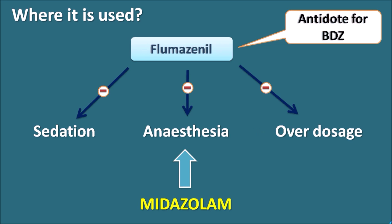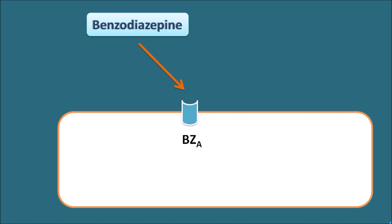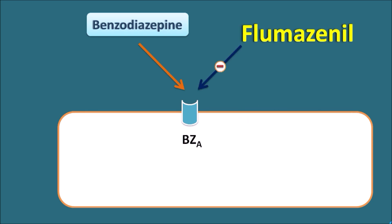Flumazenil can also be given for benzodiazepine overdoses. Whenever benzodiazepines are given at an overdose, the sedation and other CNS-depressant effects of the benzodiazepines can be reversed by Flumazenil. Benzodiazepines act on the benzodiazepine-A receptors as an agonist and Flumazenil blocks these benzodiazepine-A receptors as an antagonist. Flumazenil is competitive in nature so it binds to the same binding site where benzodiazepines also bind.